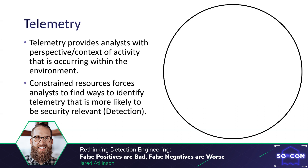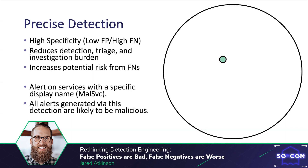It will tell you things like user account X logged on to computer Y, or a process called powershell.exe was created on computer A. The population we are testing against is comprised of the telemetry collected from our environment. Since resources are constrained, we can't review every individual event — instead we must create detection rules, a test that helps us identify malicious events, in this case malicious service creation.